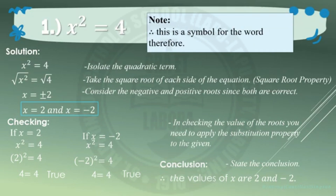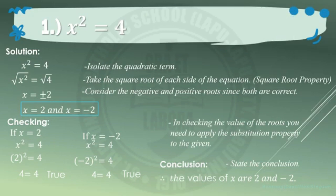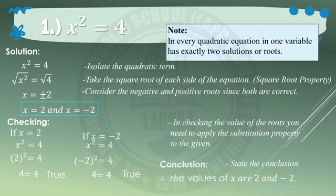Take note that the three dots in a triangular arrangement is the symbol for the word 'therefore.' Also note that in every quadratic equation in one variable, it has exactly two solutions or roots.